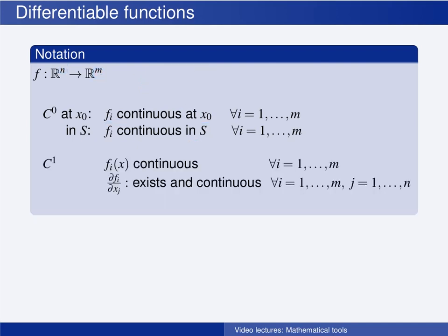If each of the elements are not only continuous but the first order derivative exists and is continuous, then the function f is continuously differentiable and we write this C^1 for short. As above, this can either be in a point x0 or in a set S.